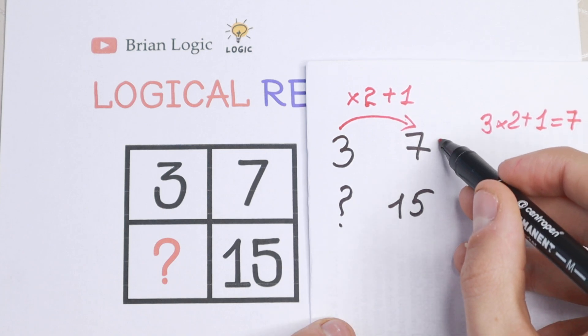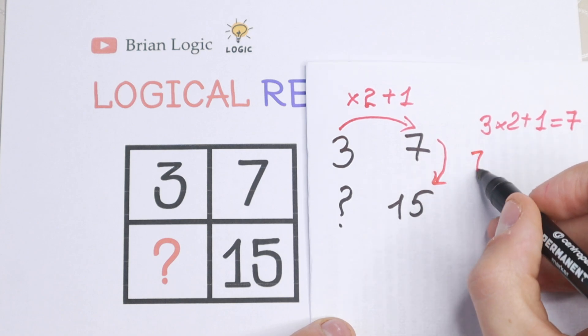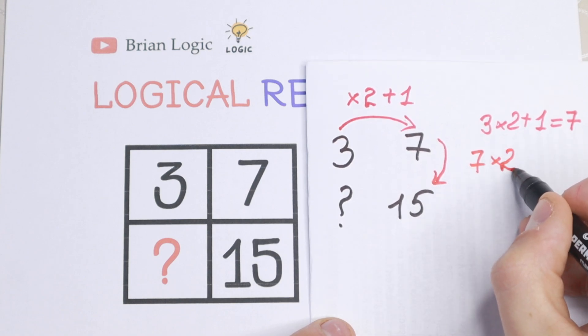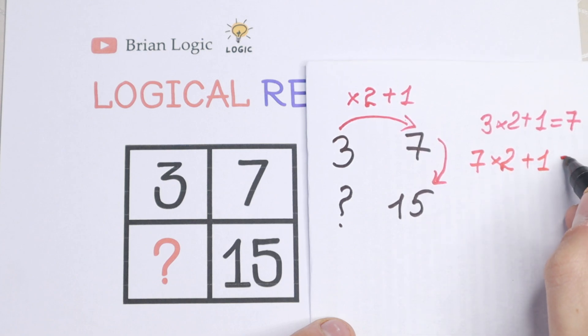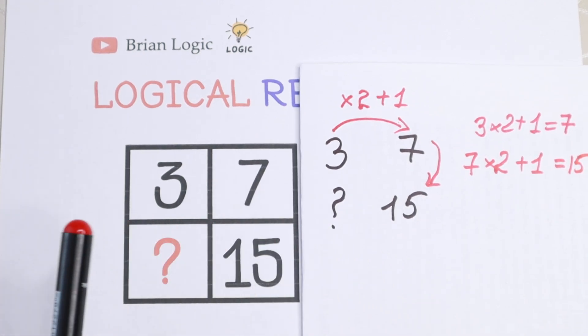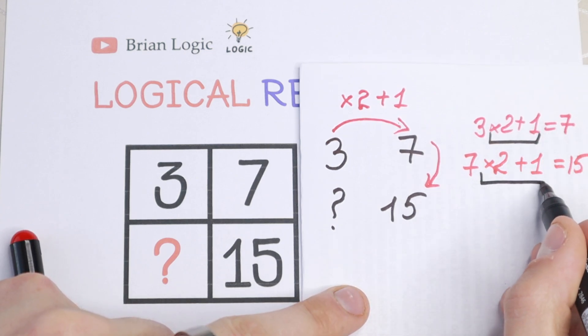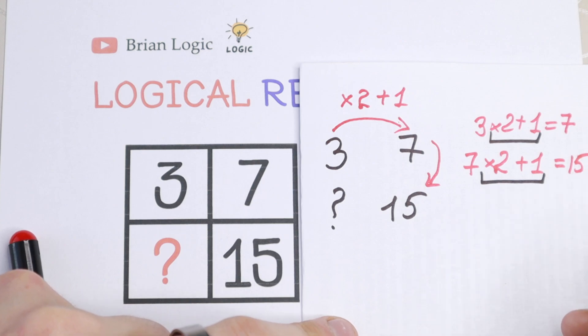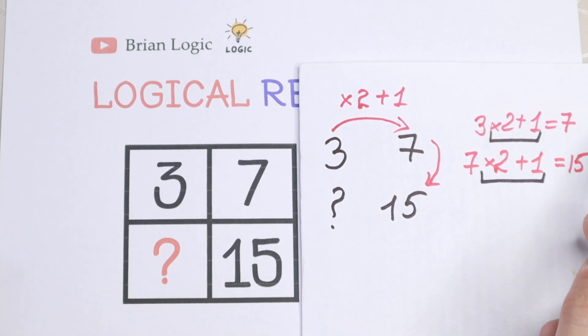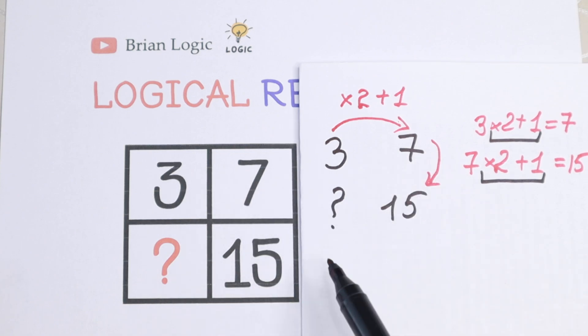Because if we multiply 3 times 2 and plus 1, we will have 7. So as you can see, multiply by 2 and add 1. And let's check this logic in this step. So let's multiply by 2 and add 1. So 7, multiply by 2 and add 1. We will have 14 plus 1. We will have our answer 15. So as you can see, we find the pattern. This is our pattern, multiply by 2 and add 1. So let's check this pattern. Of course, as you can see right here, this pattern works. Multiplying by 2, add 1, we will have 7. Multiplying by 2 and add 1, we will have 15, as you can see.